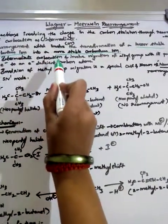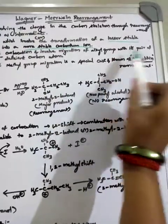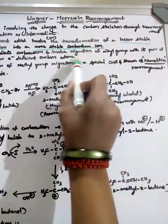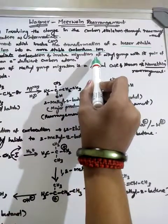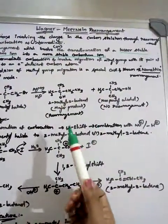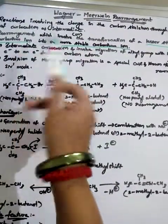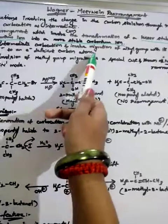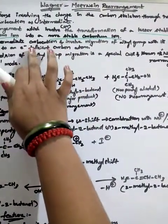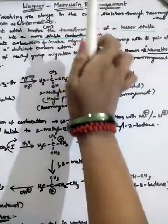In such reactions, the intermediate is a carbocation and involves migration of an alkyl group with its pair of electrons to an electron-deficient carbon atom. The alkyl group migrates with its pair of electrons and donates them to the electron-deficient carbon atom, causing a change in the carbon skeletal structure.